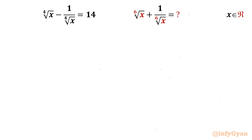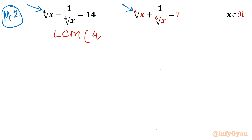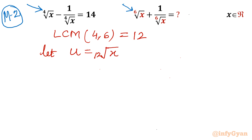Method number 2. I will use a substitution based on the LCM of the indices 4 and 6. The LCM of 4 and 6 is 12. So we consider the substitution u equals the 12th root of x. From this, u squared equals the 6th root of x, and u cubed equals the 4th root of x.